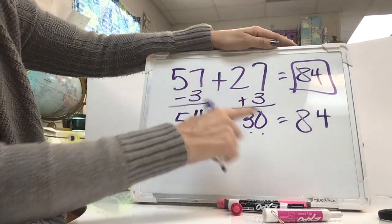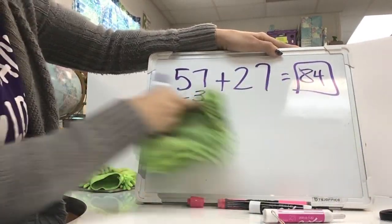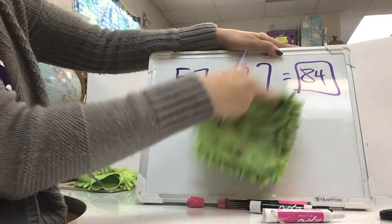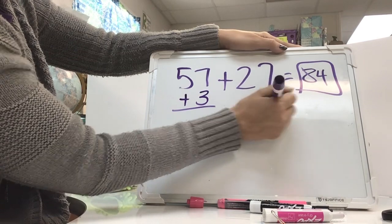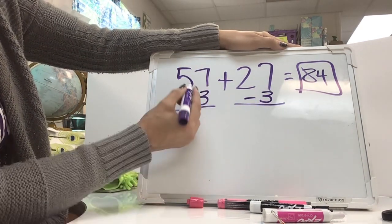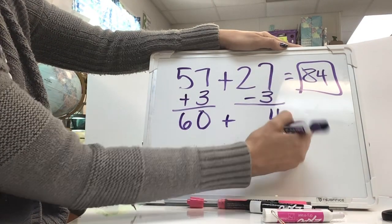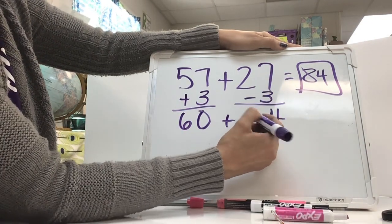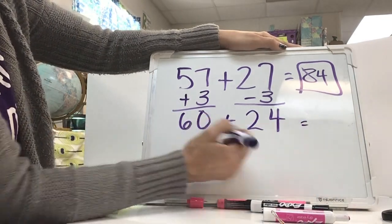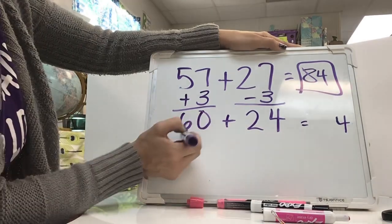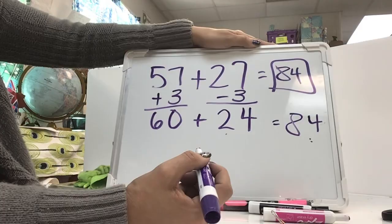Again, I could have done the same thing. You could have chosen which one you wanted to do the plus 3 to because they both have the same number in the ones place. So, again, 57 plus 3 is 60. 7 minus 3 is 4. Bring that 2 down. 60 plus 24. 0 and 4 is 4. 6 tens plus 2 tens is 8 in my 10s place, which was the same sum that I got before.